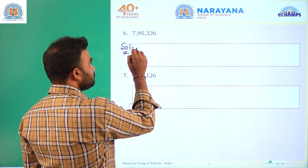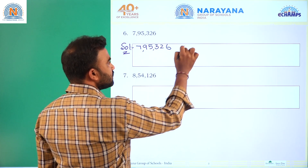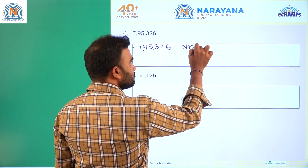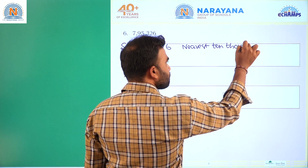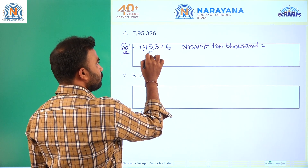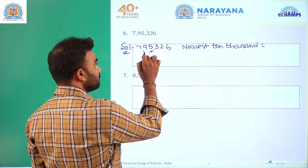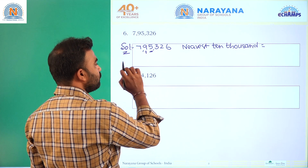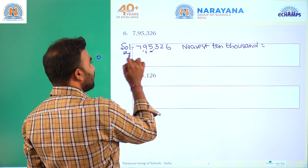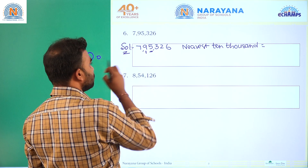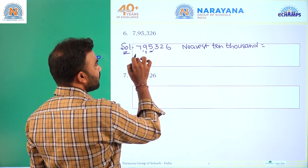Next number: seven lakh ninety-five thousand three hundred twenty-six. For nearest ten thousand: the thousands place is five, so we need to add one to the ten thousands place. Nine plus one is ten, so we write zero and carry one — seven plus one is eight. The nearest ten thousand is eight lakh.